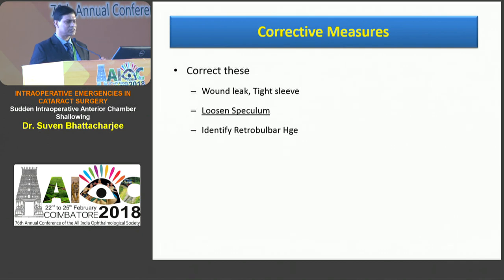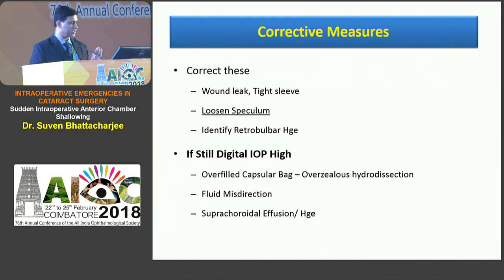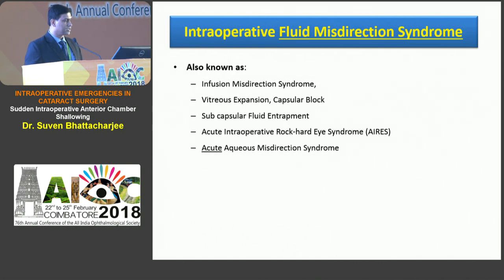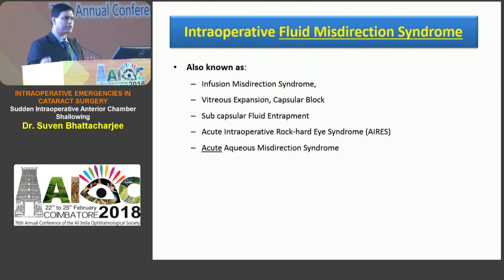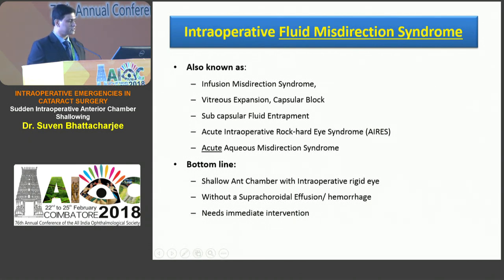The corrective measures include addressing wound leak, loosening the speculum, and identifying a retrobulbar hemorrhage. If digital IOP is still high, you may be dealing with an overfilled capsular bag from overzealous hydrodissection, fluid misdirection, or suprachoroidal effusion or hemorrhage. A condition described in the literature around 2014 is Acute Intraoperative Rock Hard Eye Syndrome, also called Acute Aqueous Misdirection Syndrome. It's essentially what was called malignant glaucoma in the post-op period, now seen during surgery. The bottom line is: shallow anterior chamber with an intraoperative rigid eye, without suprachoroidal effusion or hemorrhage, needing immediate intervention.